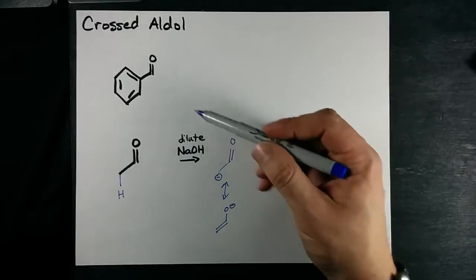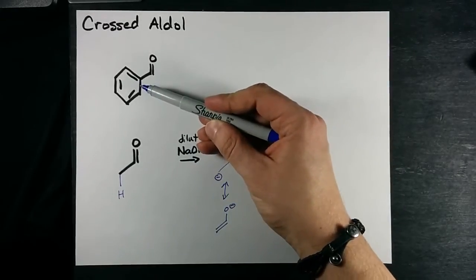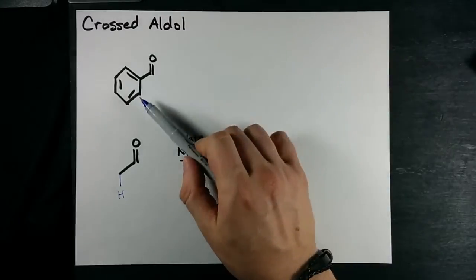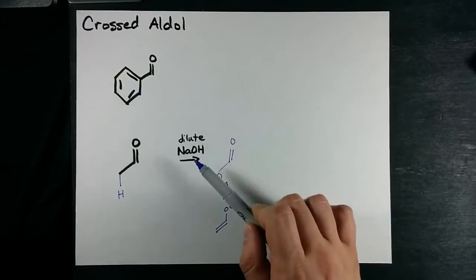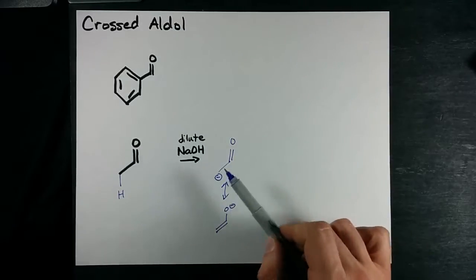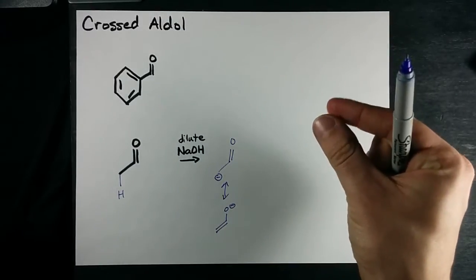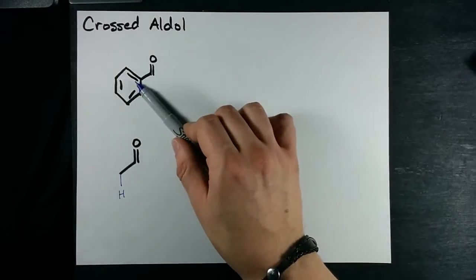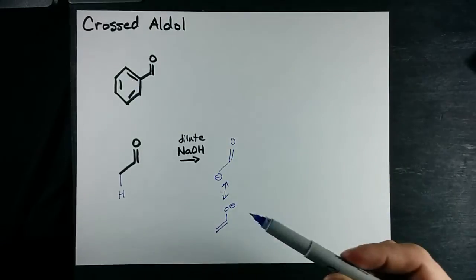And because he is in such abundant supply - after all, you started with a flask full of him and NaOH and none of this - as it gets added dropwise, immediately he's going to react with this because there's so much of him around.